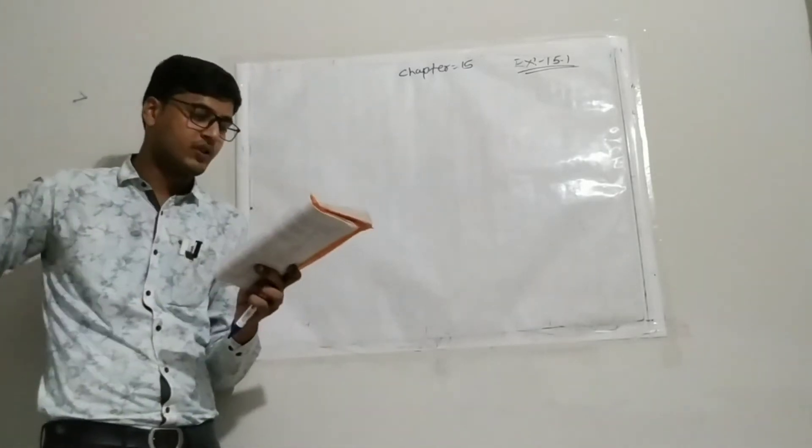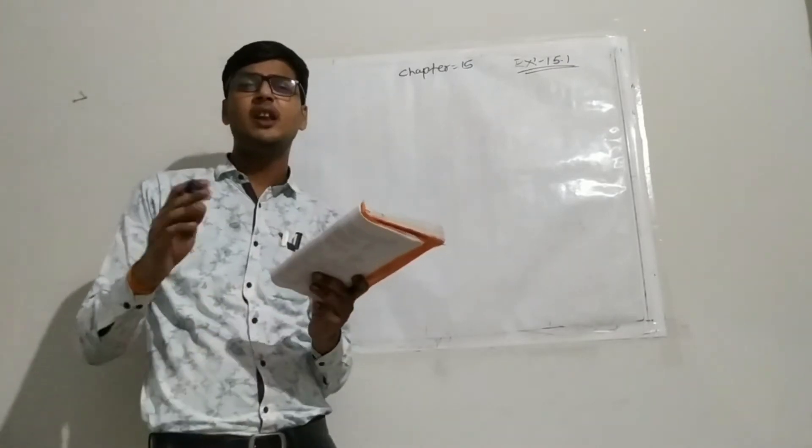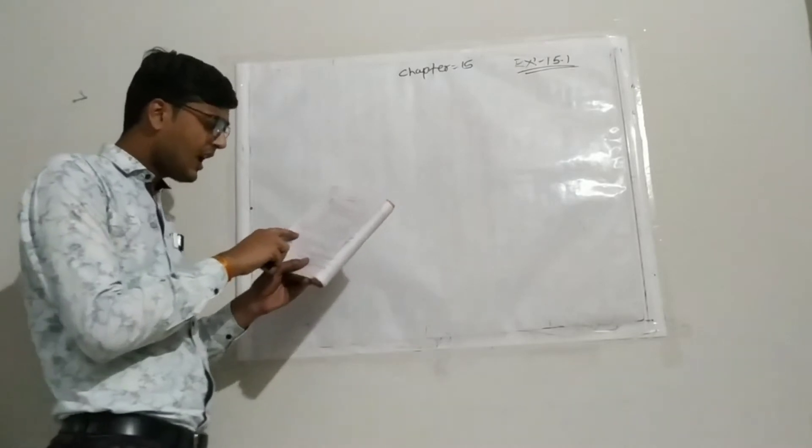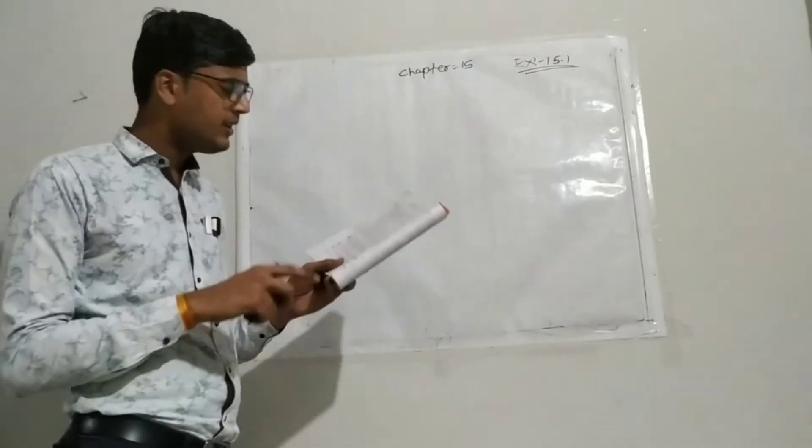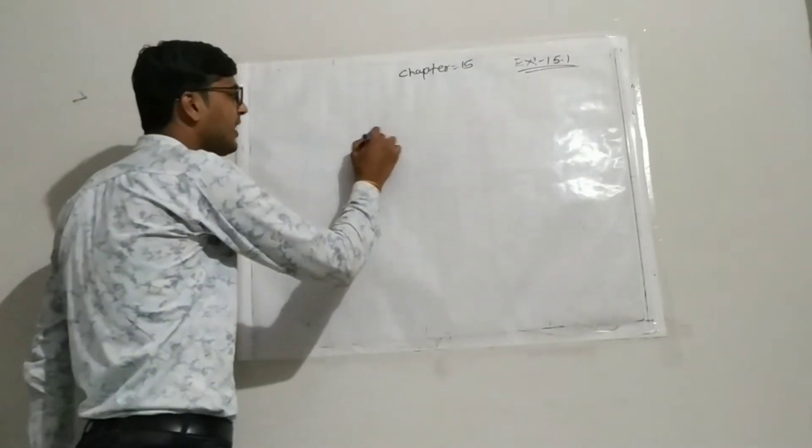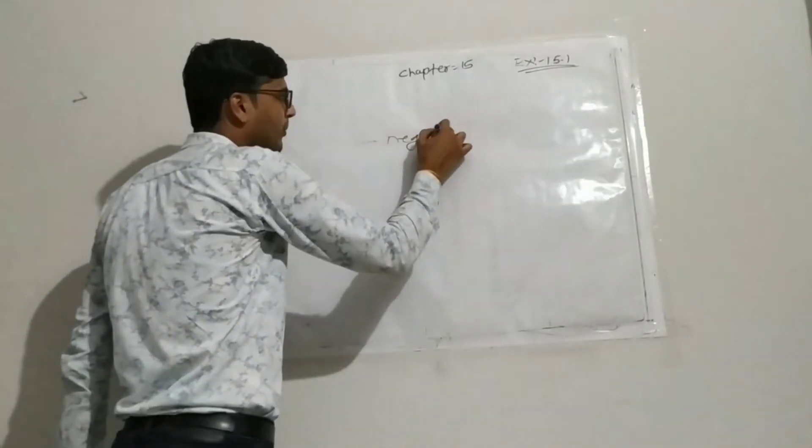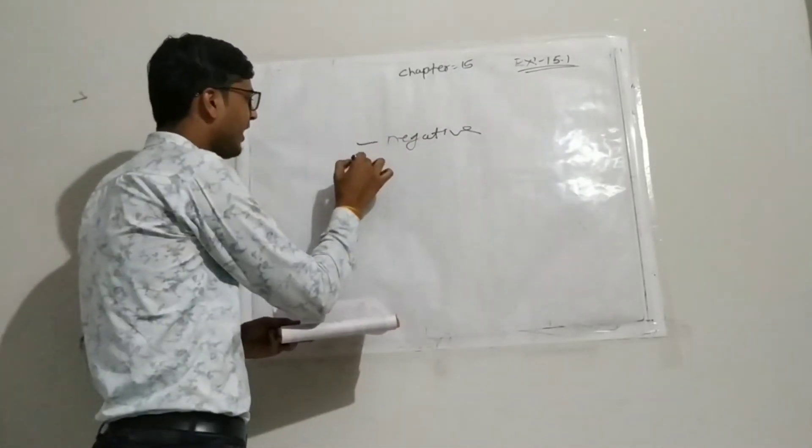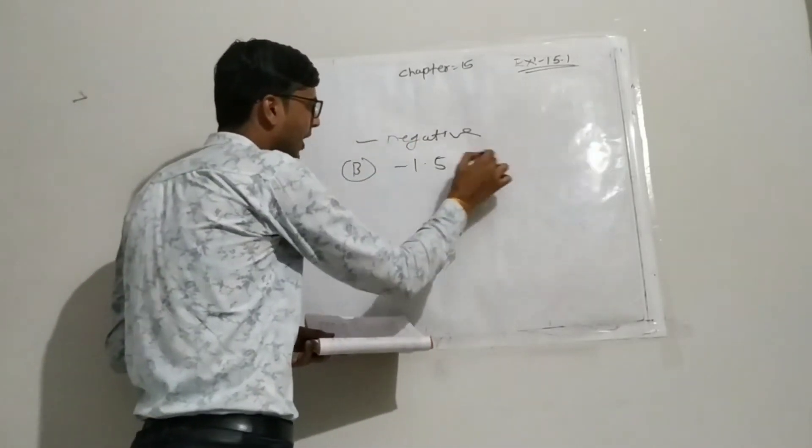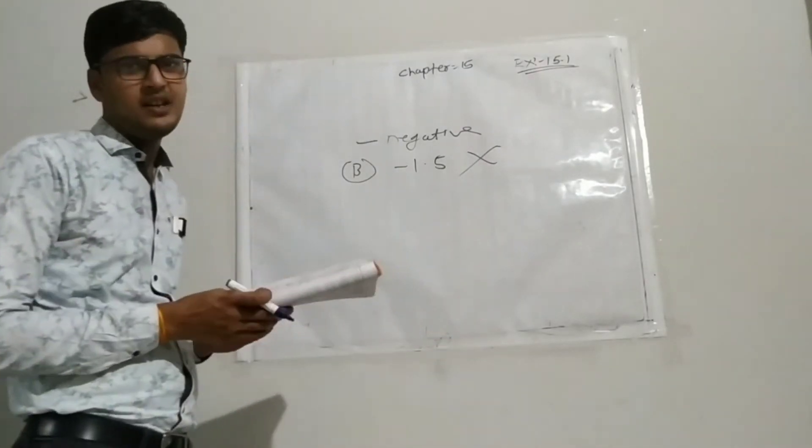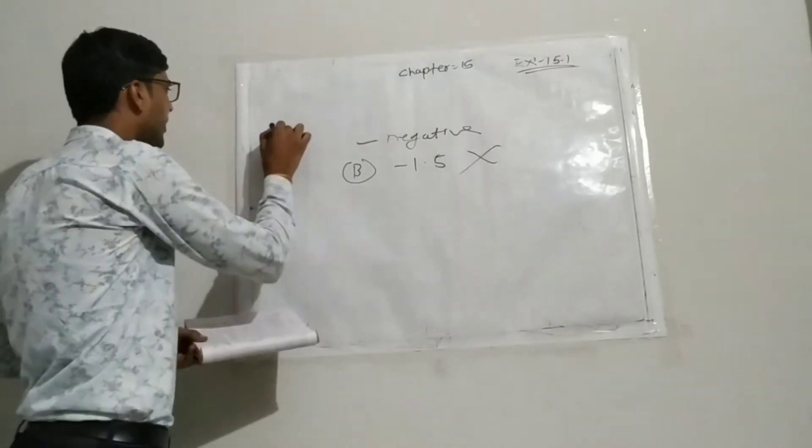Now I start question number four. Which of the following cannot be the probability of an event? So we know you have to tell from these four which cannot be the probability of an event. We know that probability can't be negative. Probability cannot be negative. So option B is correct. It means minus 1.5 is not possible.